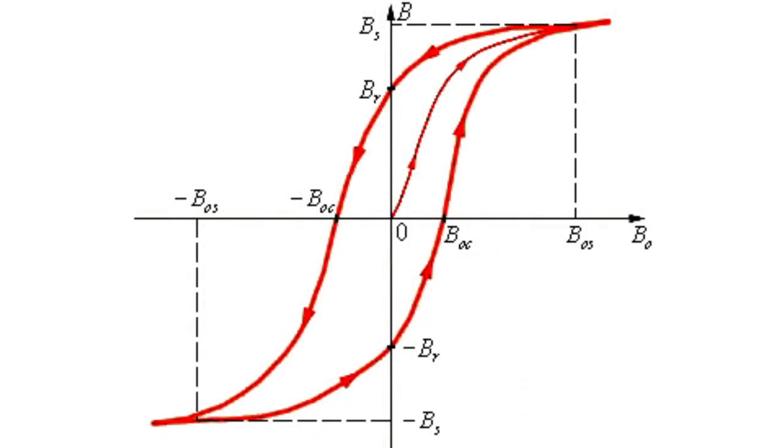Magnetization curve of the ferromagnetic sample is a complex-shaped loop, which is called a hysteresis loop. In a sufficiently strong magnetic field, ferromagnetic is magnetized to its saturation. As the field increases, the value of ferromagnetic magnetization remains virtually unchanged.